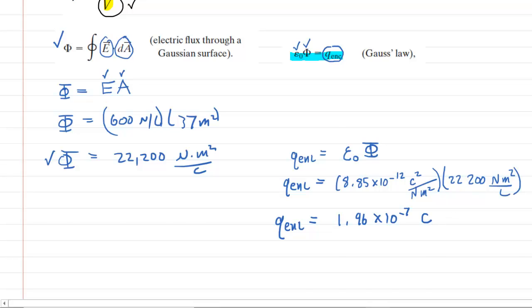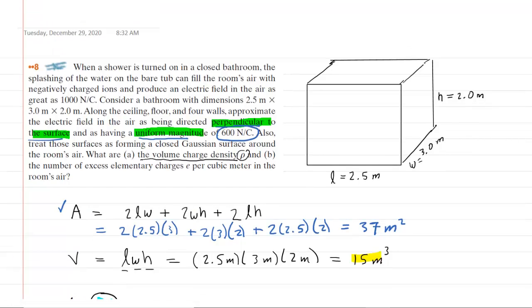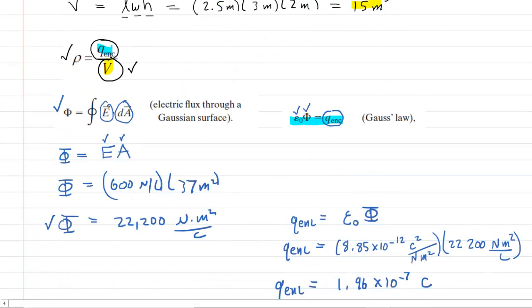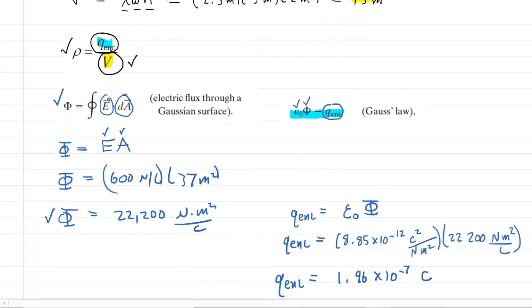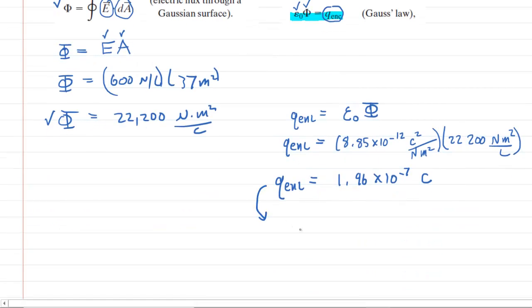Now we have to be a little bit careful here because if we scroll back up to the question, we recall that the question says that the air has been charged with negatively charged ions right there. So in our calculation, we're getting a positive answer here. But the question stated that the charges are negative. So do make sure that you make the enclosed charge negative 1.96 times 10 to the minus 7 coulombs. That's very important. So now we have the enclosed charge.